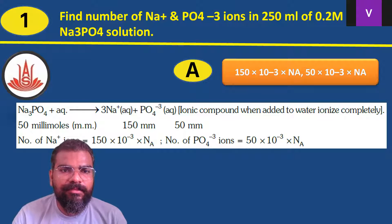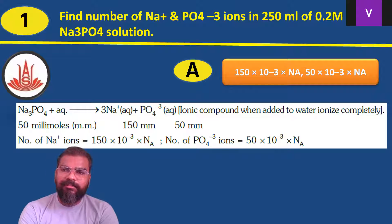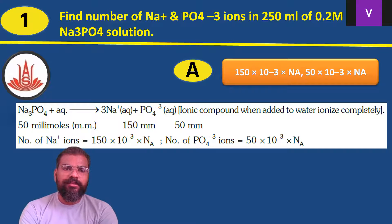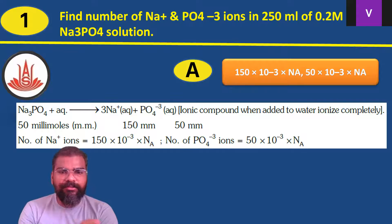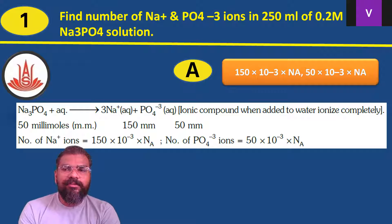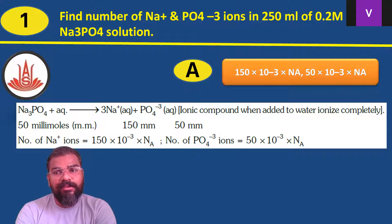We have 250 ml of 0.2 molar Na₃PO₄ solution. Na₃PO₄ in aqueous form gives 3 Na⁺ and 1 PO₄³⁻ ion. So Na₃PO₄ gives 3 Na⁺ — overall charge plus 3 — and PO₄³⁻ ions.